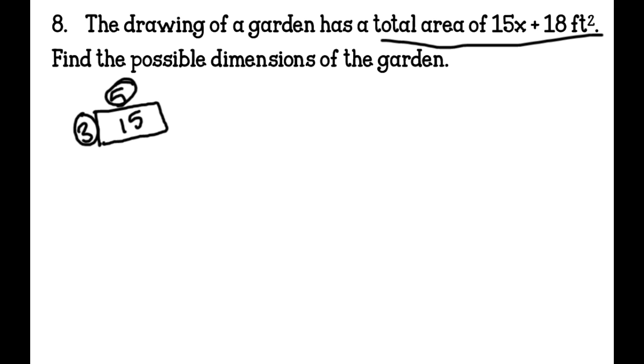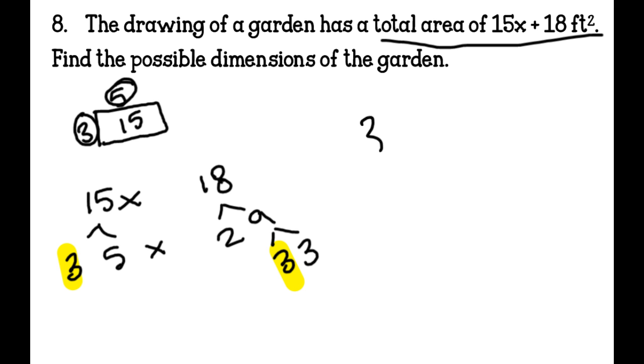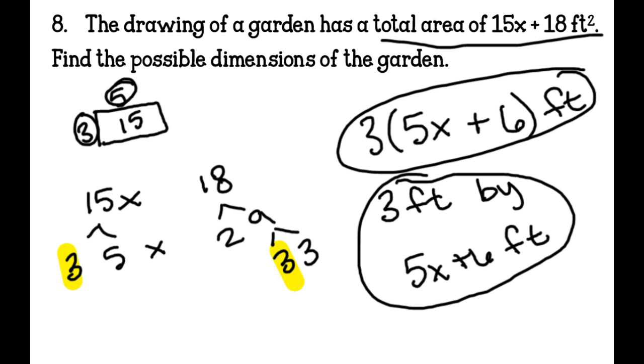So if we factor it, we have the dimensions of the garden or possible dimensions. So we find fifteen, we take 15x, we find its factors, which are three and five and x. And then we take eighteen, and we find its factors, which are two and nine, which then become three and three. So then we highlight, what do we have in common, and we have in common a three and a three. So our GCF is three. So our GCF goes on the outside, and then we have open parentheses. 15x divided by three would be 5x plus 18 divided by three would be six. So our dimensions could possibly be three feet by 5x plus six feet. And I would accept it on the test like this, but this would be a very exceptional way of writing it. And that's it for factoring.